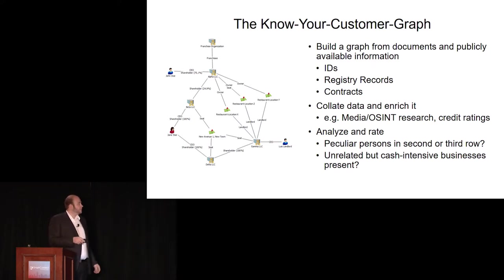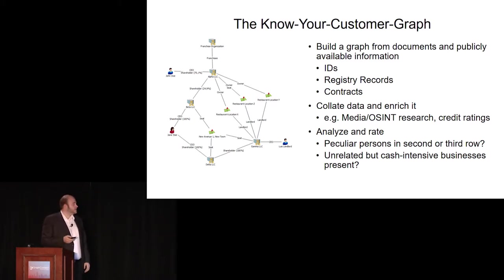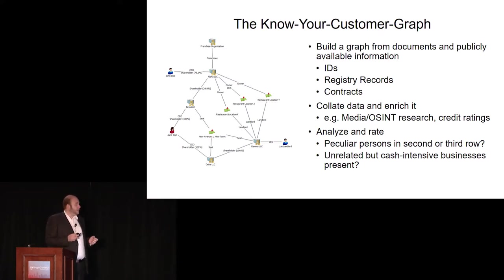Why do we build the graph? Because of the interesting part here. Let's say this is a restaurant chain with three locations. Looking at the contracts, we see all locations lead to the same landlord — which is not unusual, that's a common occurrence. What is not so common — and you only see this in the graph — is that this landlord shares the company's registered seat with the minority shareholder. And looking further, the landlord is owned by a company which in turn is owned by the owner of the minority shareholder.